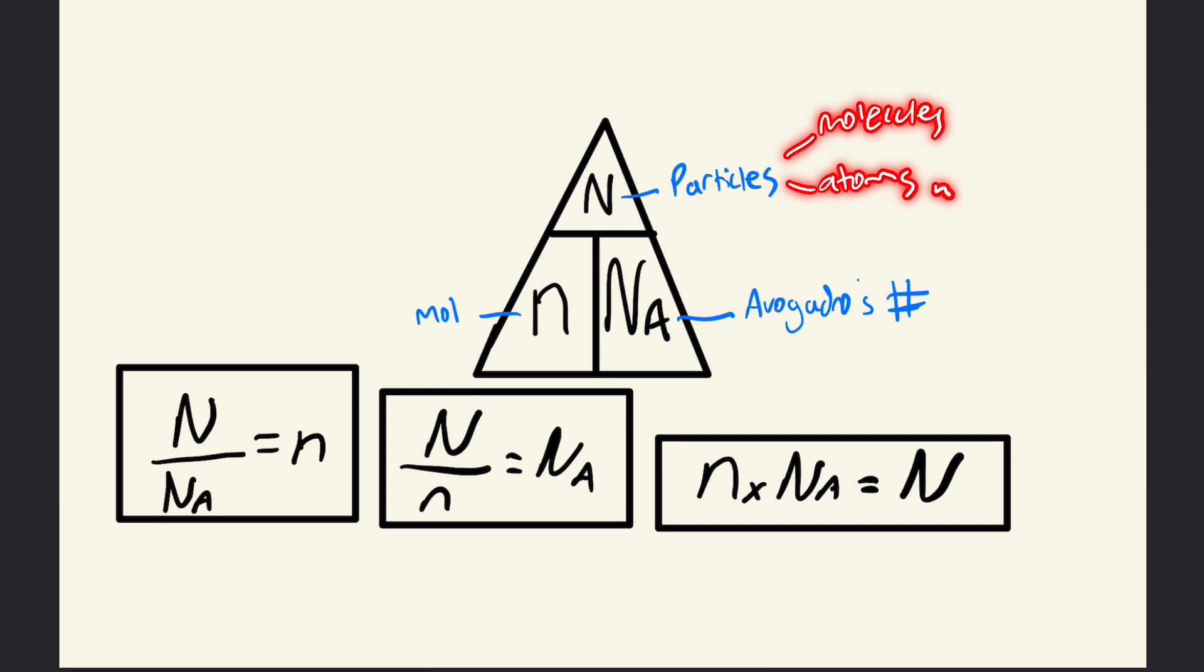The last triangle compares particles, which can be molecules or atoms, to Avogadro's number, which we talked about before, and moles as well.